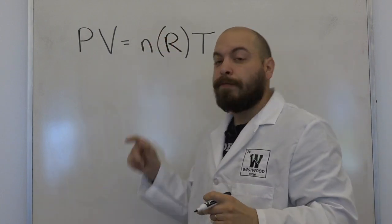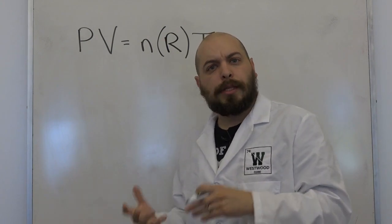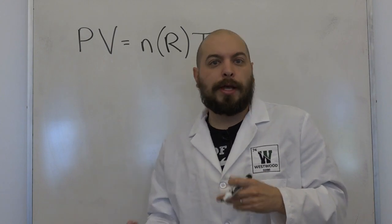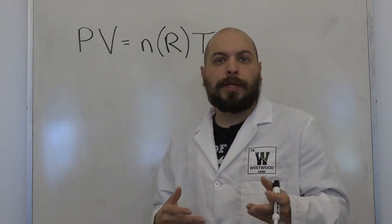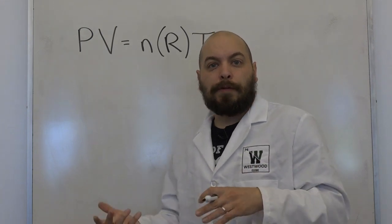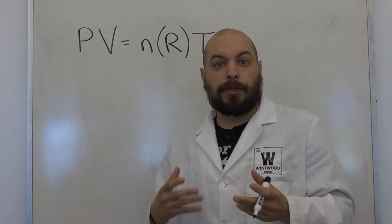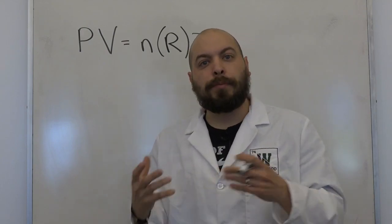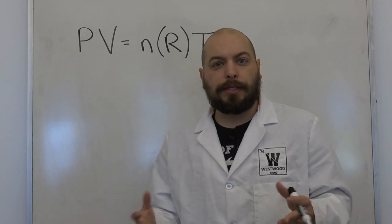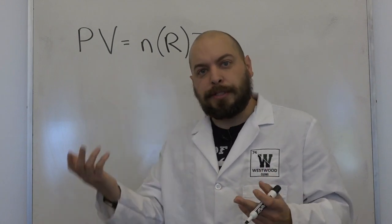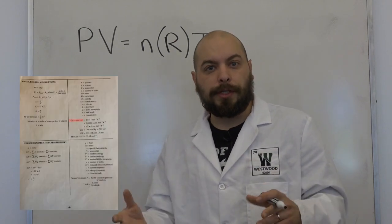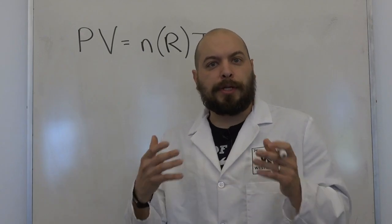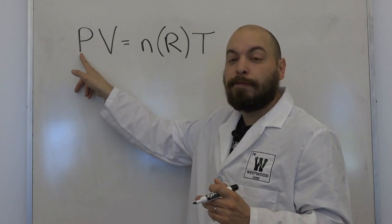There are actually a few values that R can take on, and the value depends on the units you're using for pressure. When we talk about thermochemistry, we often use an R value that involves joules, whereas in gas law we tend to use atmospheres, millimeters of mercury, or torr. The good news is you're never going to have to memorize these R values — they're always given to you on a formula sheet. But you do need to understand when to input each one, based generally on the units of your pressure.